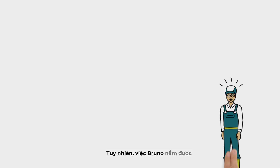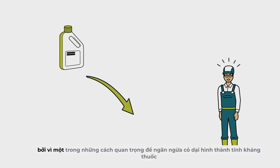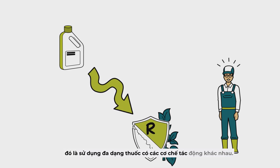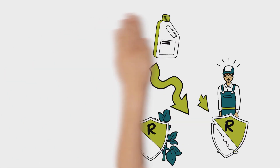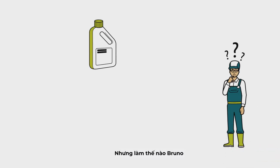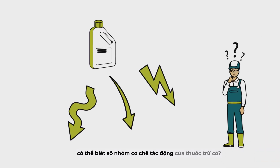Despite this, it's important for Bruno to know his herbicide's modes of action, because one of the key ways to prevent weed resistance to herbicides is to diversify modes of action. But how can Bruno know what his herbicide's mode or modes of action is?